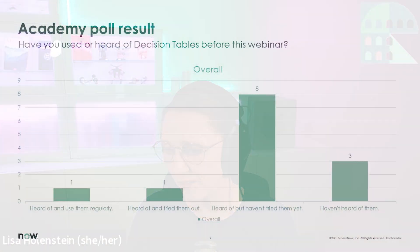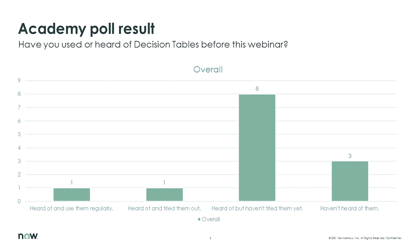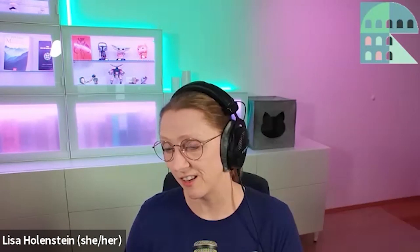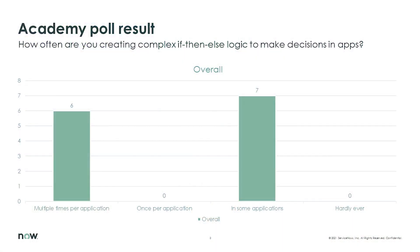Looking at the poll: many people have not heard of decision tables at all — about a quarter haven't heard of them. I hope this will be enlightening. At least two people have tried them out or are even using them regularly. The second question — how often are you creating complex logic to make decisions — shows multiple times per application; yes, we have to make decisions everywhere in our applications.